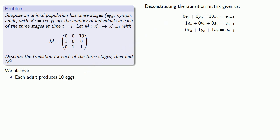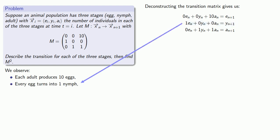The number of nymphs at time n+1 is 1 times the number of eggs at time n, plus 0 times the nymphs, plus 0 times the adults at time n. We can read that as every egg turns into 1 nymph. The number of adults at time n+1 is 0 times the eggs, plus 1 times the nymphs, plus 1 times the adults. Every nymph turns into an adult, and every existing adult remains an adult.